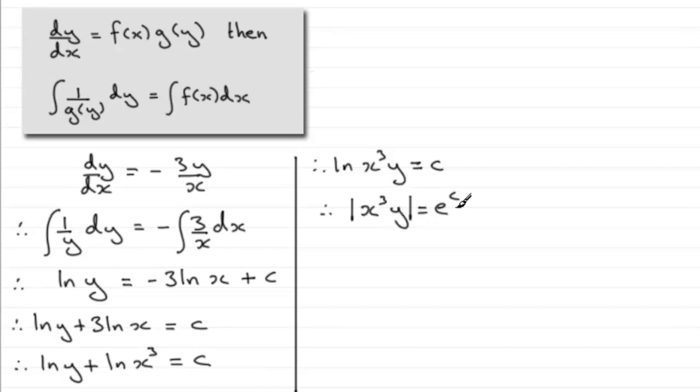If I let this constant equal say a, let a equal e to the power c, then I've got that y would equal, if we took the positive version and divided by x cubed, then y would equal a over x cubed. If I took the negative value of this, then y would equal minus a over x cubed. So y can equal plus or minus a over x cubed.